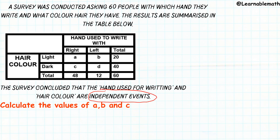This is a very important statement, and it makes sense practically — the fact that you write with your right or left hand does not influence your hair color. Those are independent events. The question asks us to calculate the values of a, b, and c. 'a' is someone writing with the right hand having a light hair color, 'b' is left hand with light hair, and 'c' is right hand with dark hair. We cannot find these values without using the independence statement.